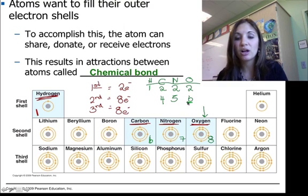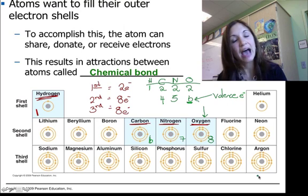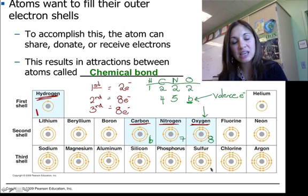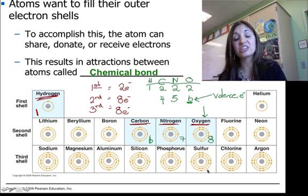It has what we call six valence electrons. Six electrons in that outermost energy level. Every atom in that same column as oxygen also has six valence electrons.